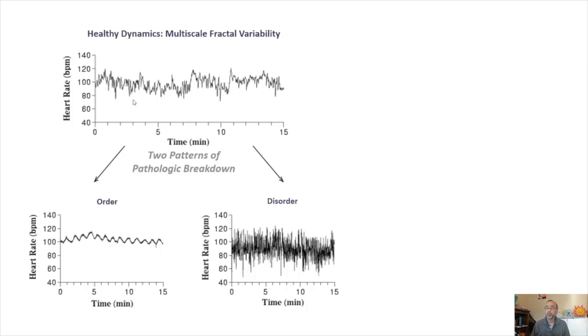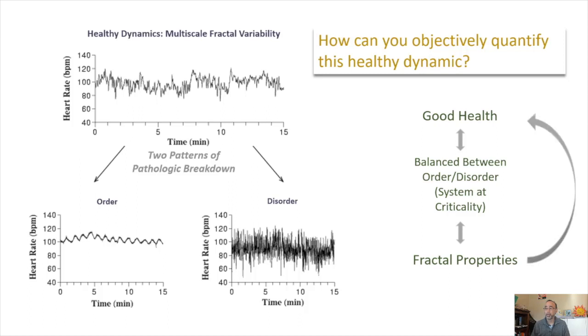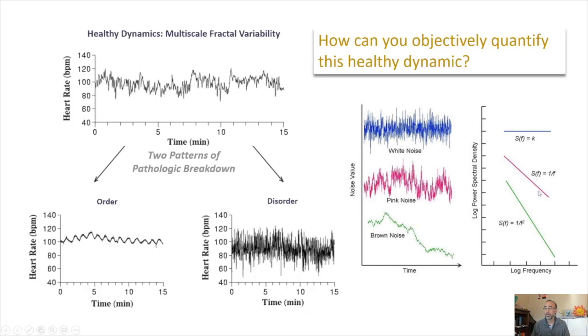You can take this a little further and say that if health is truly a balanced state between order and disorder, then disease has got to be a pathological breakdown into severe order and then severe disorder. We can ask, then how can you objectively quantify this healthy dynamic? And you can make this logical step. First, if good health is truly a balance between order and disorder, and this is just like a system at criticality. And if a system at criticality demonstrates fractal properties, then truly good health must have fractal properties. And since this is a time series, what we're interested in is something called pink noise, which is a balance between the white noise and brown noise. And the nice balance here is similar to the pink signals that we see here, whereas the breakdown into disorder is similar to white noise, and the breakdown into order is brown noise.